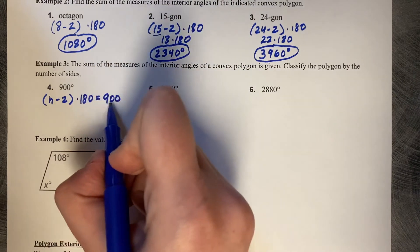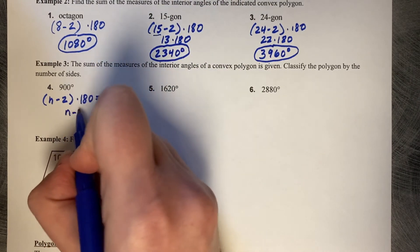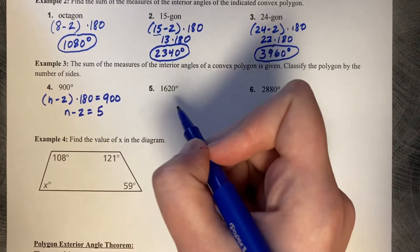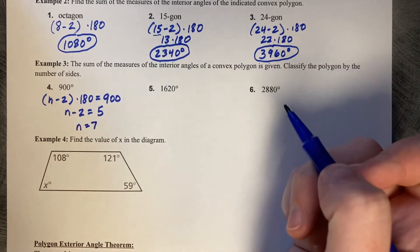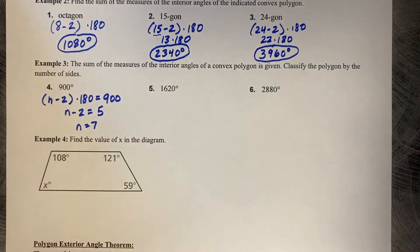Now if you divide both sides by 180, so n minus two, 900 divided by 180 is five. And then plus two, n equals seven. So a heptagon has a total sum of 900 degrees.